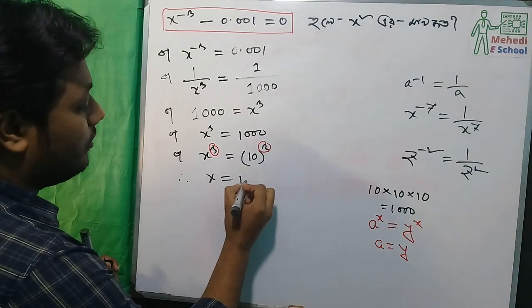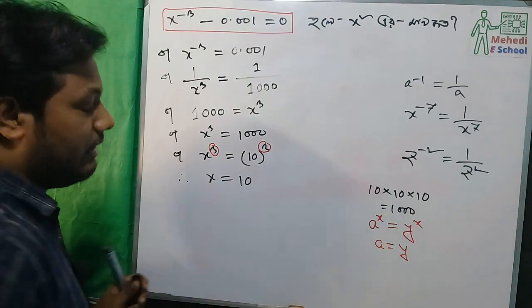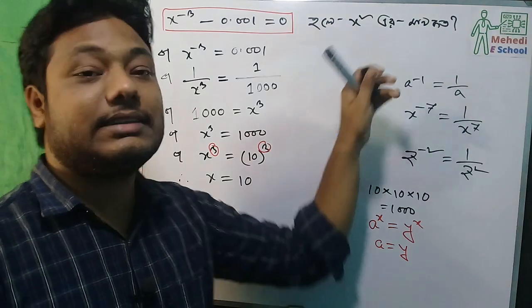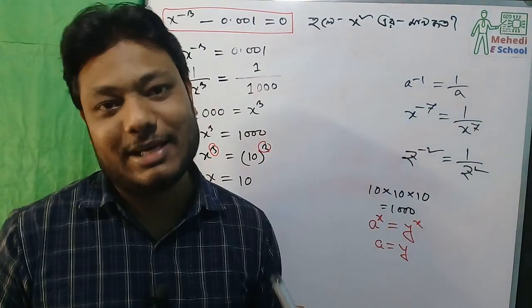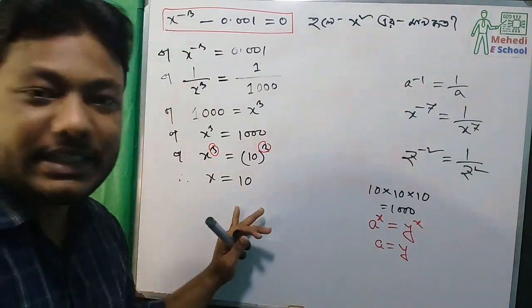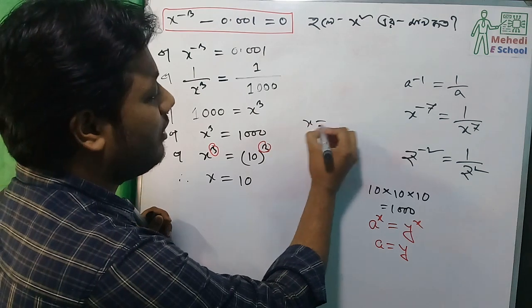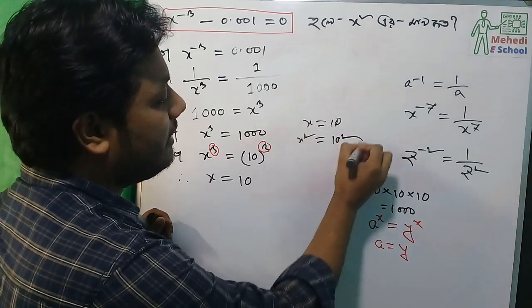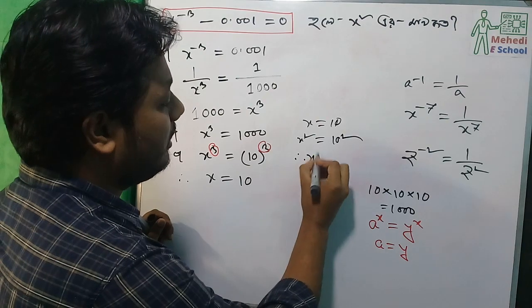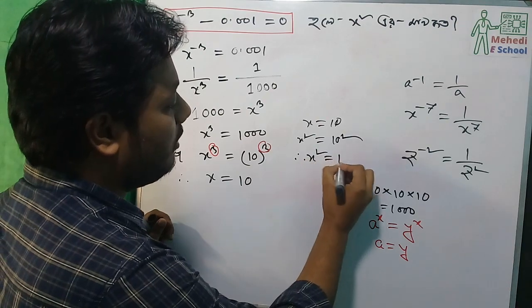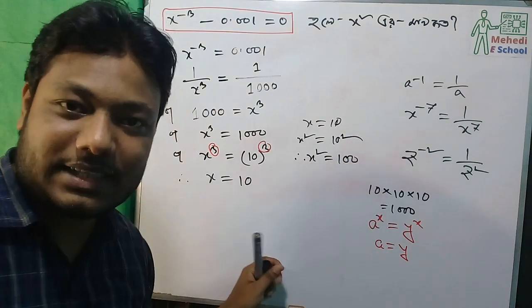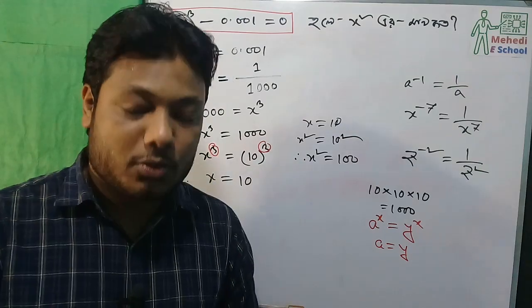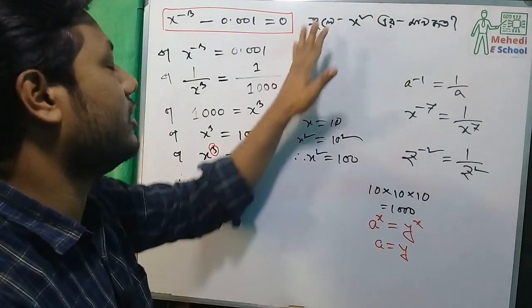x equal to 10. We have x square, x equals to 100.